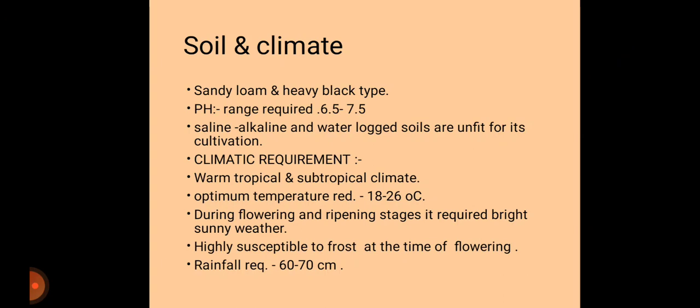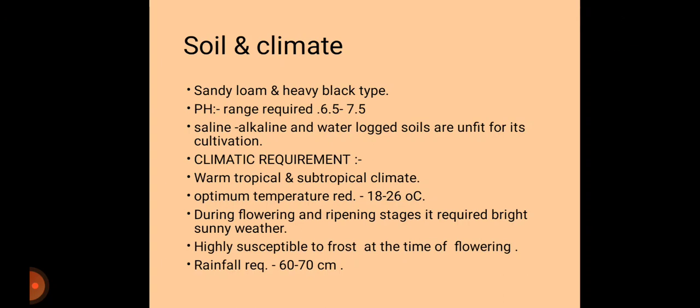For climatic requirements, a warm tropical to subtropical climate is favorable for growth and development of the tur crop. The optimum temperature required is 18 to 26 degrees Celsius. During flowering and ripening stages, bright sunshine hours are required. The crop is sensitive to frost at the time of flowering. Annual average rainfall required is 60 to 70 centimeters, i.e., 600 to 700 millimeters.